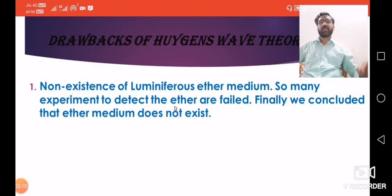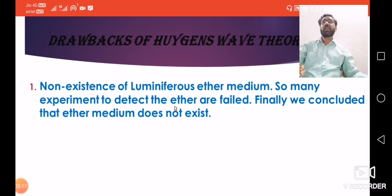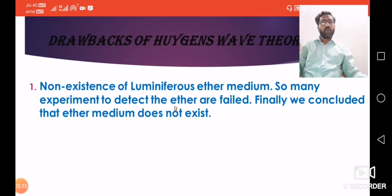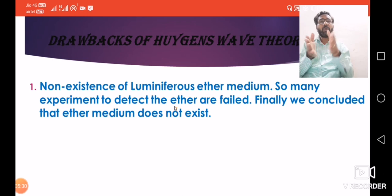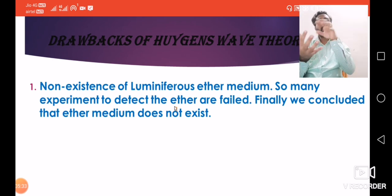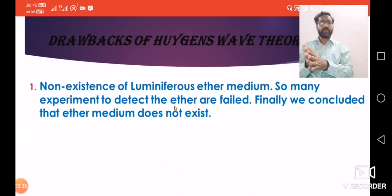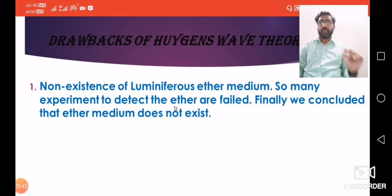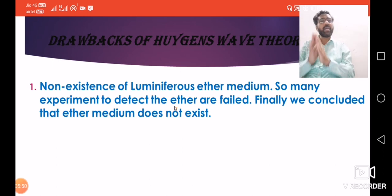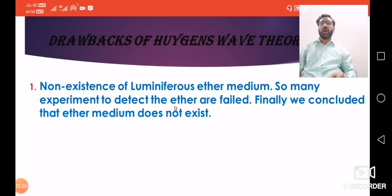The first drawback is the non-existence of the luminiferous ether medium. As we discussed, Huygens assumed a hypothetical medium named luminiferous ether that is present everywhere. However, the non-existence of this luminiferous ether medium is a main drawback of Huygens' wave theory.